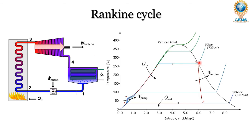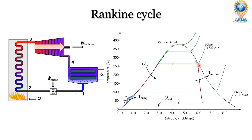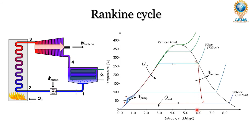From 3 to 4, since it is an isentropic process, the line on the T-S diagram will be straight or approximately equal to a straight line.